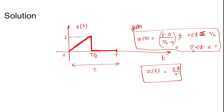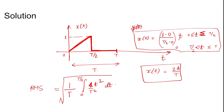We need to find the area under the squared signal from 0 to T/2. The RMS is the square root of the integral from 0 to T/2 of x(t) squared dt, multiplied by one over T. Substituting x(t) = 2t/T, we integrate (2t/T)² = 4t²/T². The integration gives t³ over 3, times 1 over T³, evaluated from 0 to T/2.